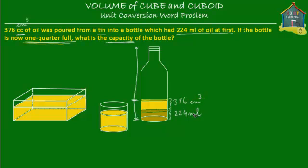Actually, this is a very simple problem to solve. 376 cubic centimeters is the same as 376 milliliters, because one centimeter cube is equal to one milliliter. So 376 cc equals 376 ml. Now what do we have to find out? We have to find out the capacity of the bottle. From here to here is one quarter full — one quarter of the capacity.